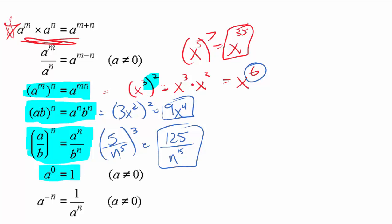We've got one more to look at, and this one is pretty easy once you get the gist of it: anything to the zero power is equal to 1. For example, 10 to the zero power is just 1. And x to the fifth in parentheses to the zero power is still just equal to 1.